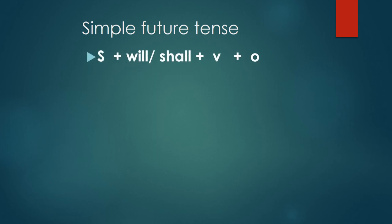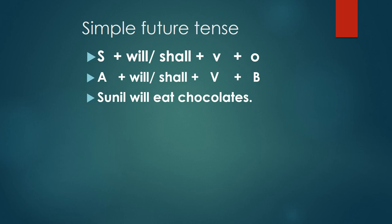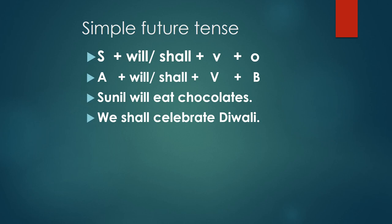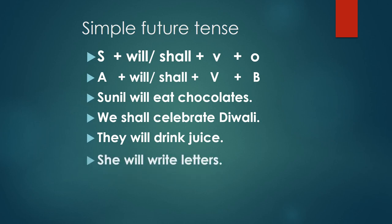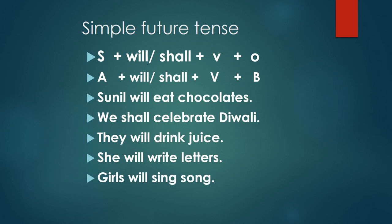Subject A shall/will an object B. A is the subject, B is the object. Examples in active voice: 'Sunil will eat chocolates' — Sunil chocolates kaayega. 'We shall celebrate Diwali' — Hum Diwali manayenge. 'They will drink juice' — We juice pihenge. 'She will write letters' — Vakhat likhegi. 'Girls will sing song' — Ladakya gaane gaayenge. 'They will go to school' — We school jayenge.